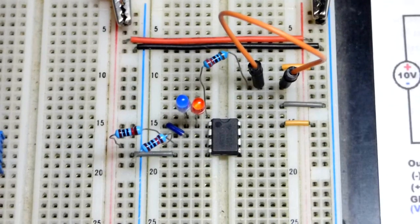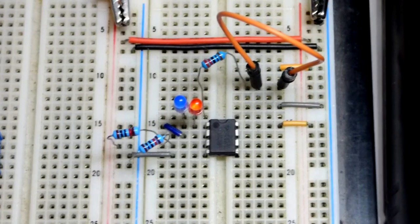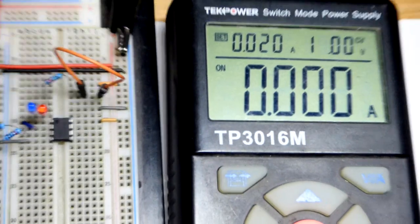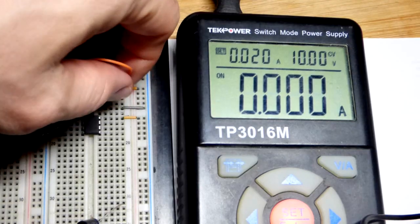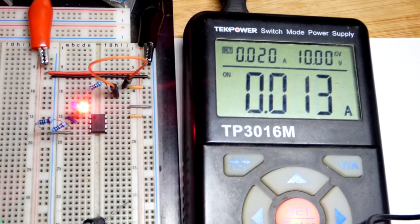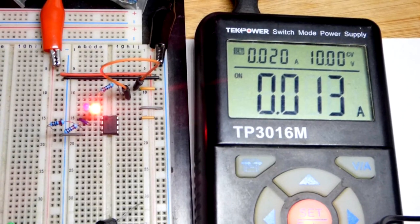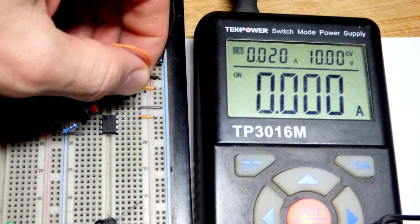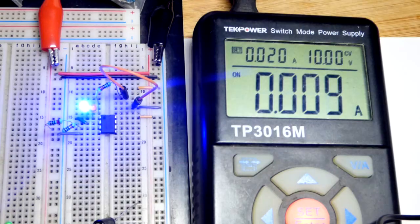Even though we have 10 volts at the rail, which obviously you can't see unless you look at the power supply and see 10 volts right there. So we should have a little bit more current through the red LED because it doesn't drop as much voltage as the blue LED.